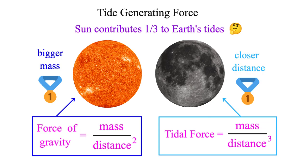Because of its closer distance. So that's where distance makes a much bigger difference for tides, but less of a difference for gravity.